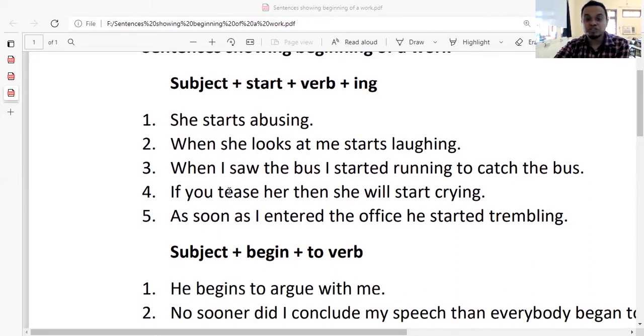Number four. If you tease her, then she will start crying. Tease means to irritate. Number five. As soon as I entered the office, he started trembling. So in these examples, the first rule, subject plus start plus verb plus ing has been used.